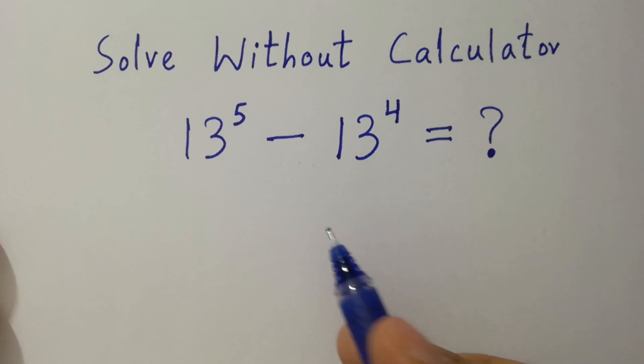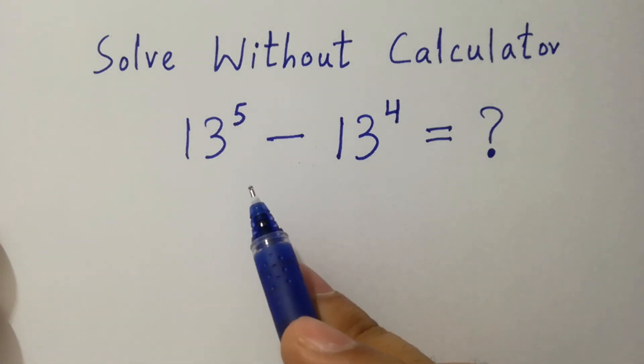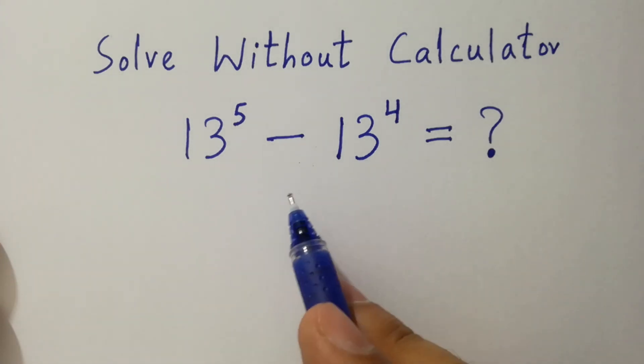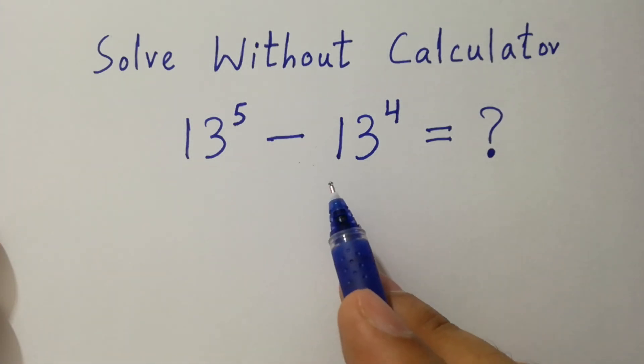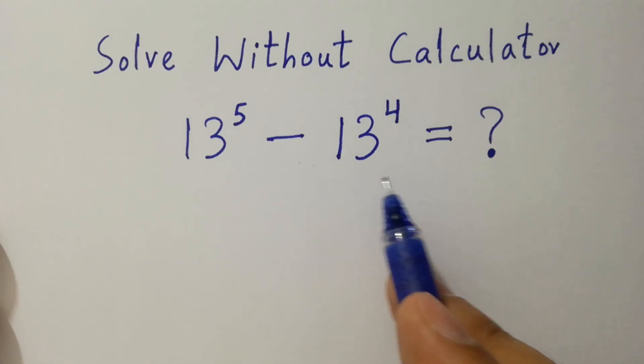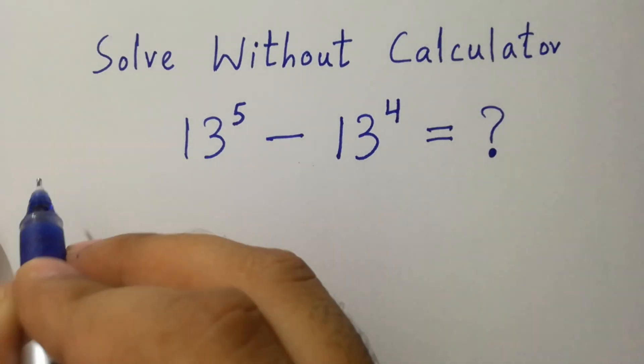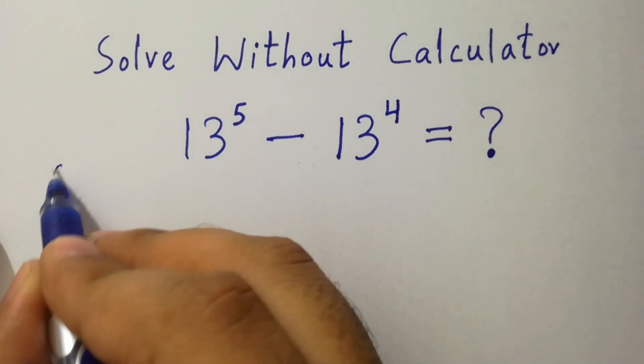Hello friends. 13 to the power 5 minus 13 to the power 4 equals what? Let's have a solution.